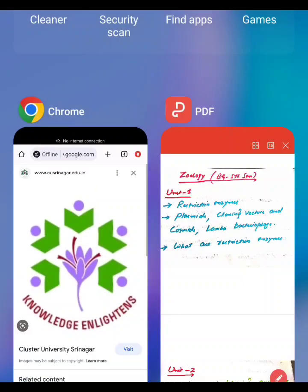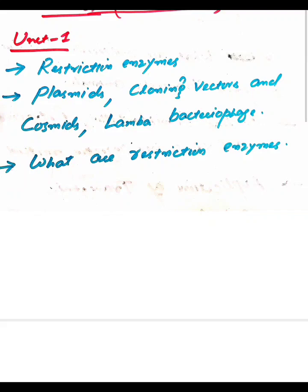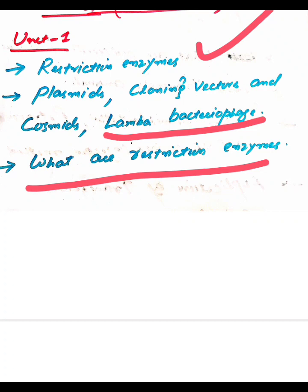Unit 1: What are the important questions in unit 1? They include what are restriction enzymes, what are plasmids, cloning vectors and cosmids, lambda bacteriophage. What are restriction enzymes? This question has been given two times, so it is most important question.